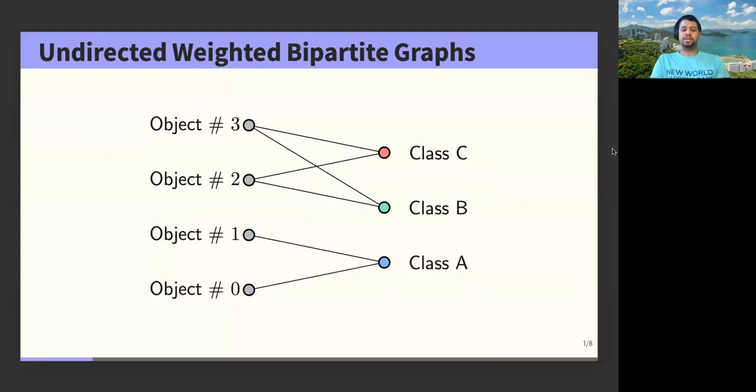In this work we are interested in estimating undirected weighted bipartite graphs. To simply put, a bipartite graph is a graph where the nodes can be decomposed into two disjoint sets. We call them here the set of objects and the set of classes. Another aspect that we explore is the fact that we can have k-component bipartite graphs. In this pictorial example here we see that the graph is bipartite and has two components.